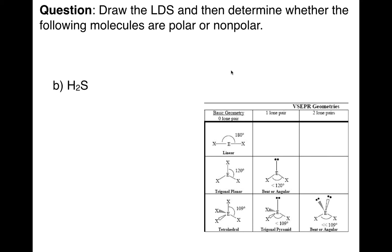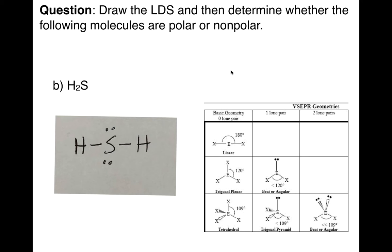Next up: H2S. If I were to draw H2S totally flat, it would look something like this. Make sure you know how many lone pairs of electrons you have on your central atom. H2S has two lone pairs of electrons on the central atom, which means it has a bent geometry with an angle much less than 109 degrees. That means H2S is also polar.